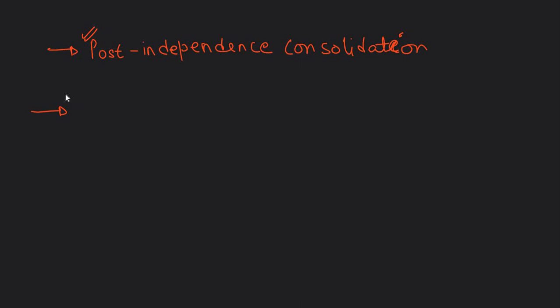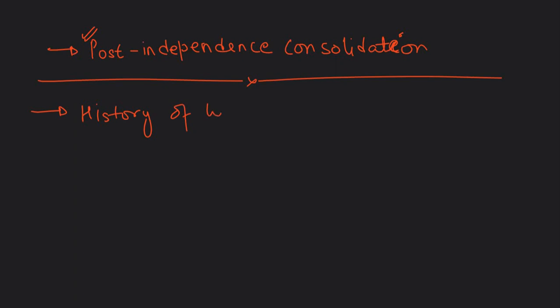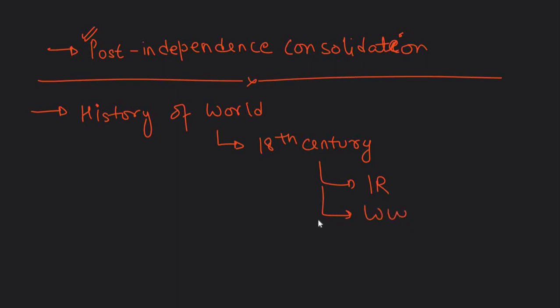Then the syllabus talks about World History. Students who don't know the syllabus will study anything because World History is very vast. But UPSC has asked only a limited part. UPSC says: whatever events started from the 18th century, those you have to study in World History. For example, the Industrial Revolution, the World Wars, and the redrawal of boundaries after the World Wars.